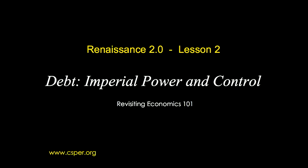You may not believe the issue of empire yet because empires are based on top-down control. In the past, emperors have used militaries and people on horses called knights to exert their power. Lesson 2 shows how debt and debt-based money is the basis for top-down control in our empire.